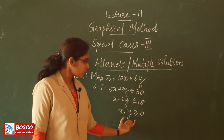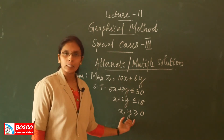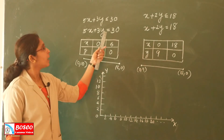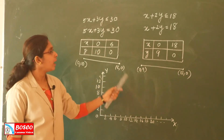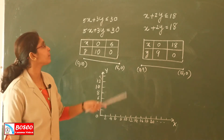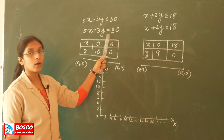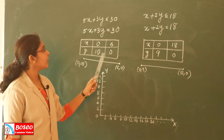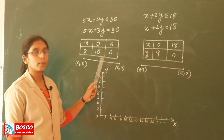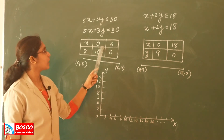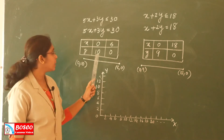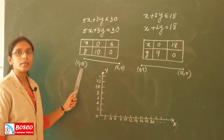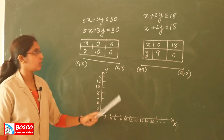Corresponding to this problem, we will construct a graph. We plot a graph corresponding to the constraints. Each constraint is converted to its equality form — the equality gives a line. The first line corresponds to the initial point 0, 10 and the terminal point 6, 0.